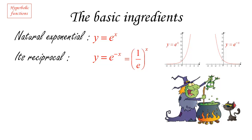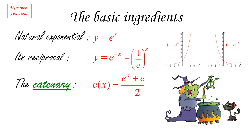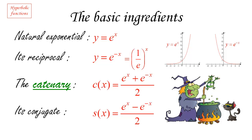What we're going to do now is take these two basic ingredients and put them together into a magic potion that will provide us with these hyperbolic functions. The recipe is quite simple. The first hyperbolic function we're going to consider is something called the catenary — I'll explain in a few minutes what that word means. The catenary is the function c of x defined by e to the x plus e to the minus x, divided by 2. So it's just the average of the natural exponential and its reciprocal.